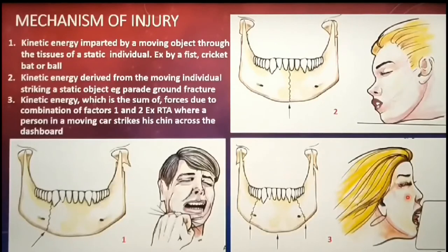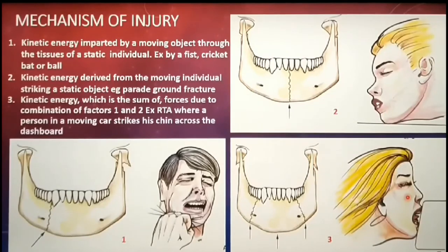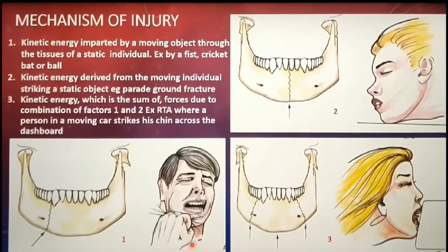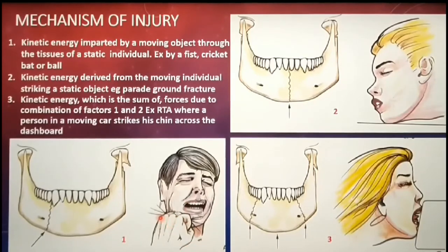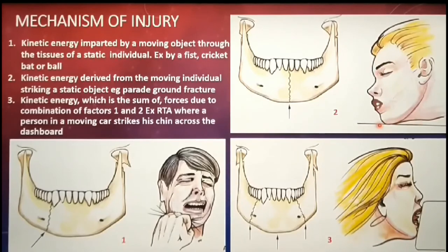Injury to the condyle may be caused by a variety of mechanisms. Lindqvist divided traumatic forces causing condylar injury into three categories: the first is energy imparted on a static individual by a moving object, for example a blow to the face by a fist or a bat; the second type of force is that of a moving individual striking a static object.